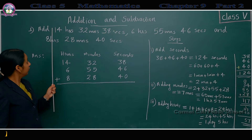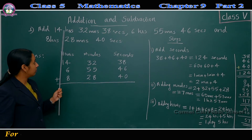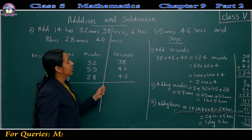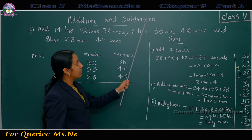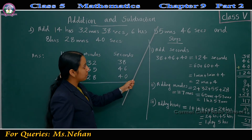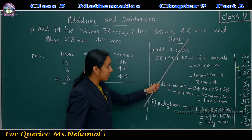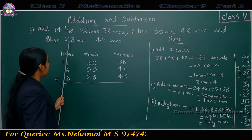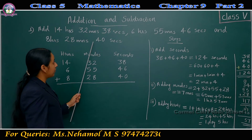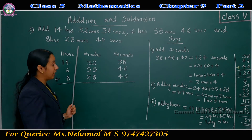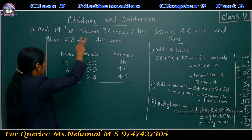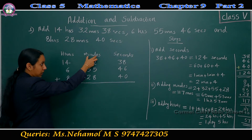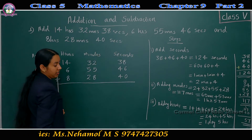First example: add 14 hours, 32 minutes, 38 seconds plus 6 hours, 55 minutes, 46 seconds and 8 hours, 28 minutes, 40 seconds. We can arrange the given values as hours, minutes, seconds.